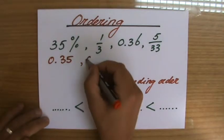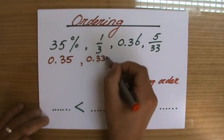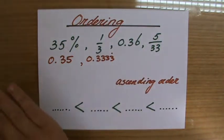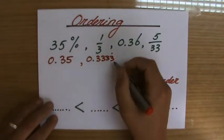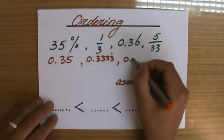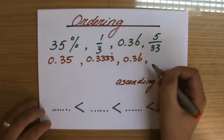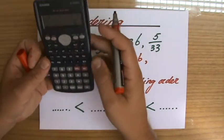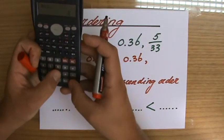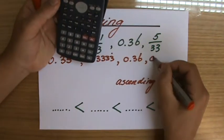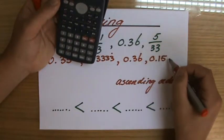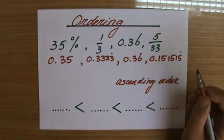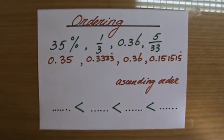1 divided by 3 is 0.333... and it just continues with those 3s. 0.36 is already a decimal. For 5 over 33, I'll use my calculator: 5 divided by 33 gives 0.151515... that also continues.